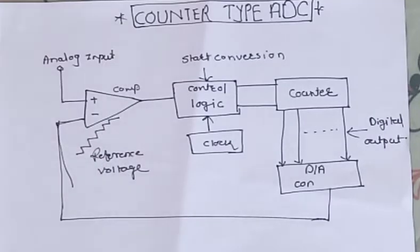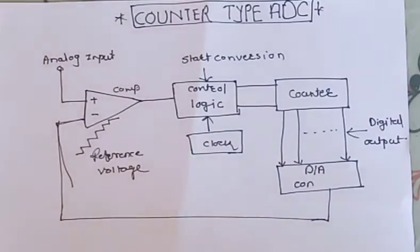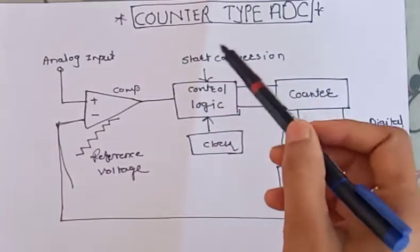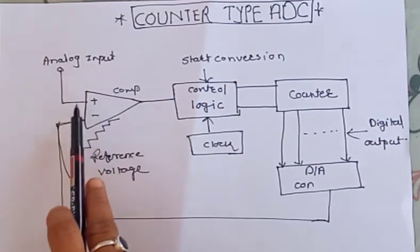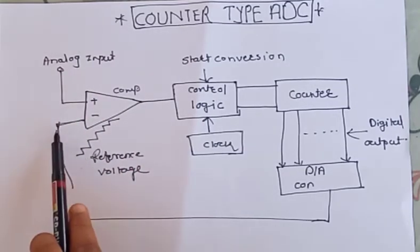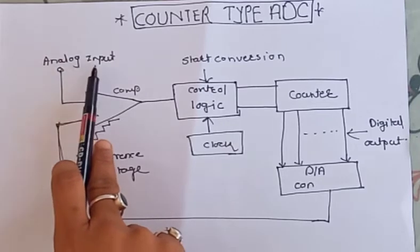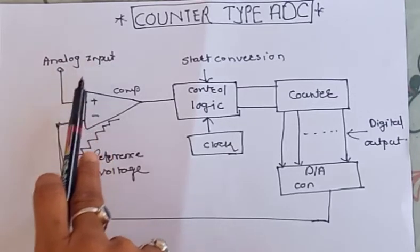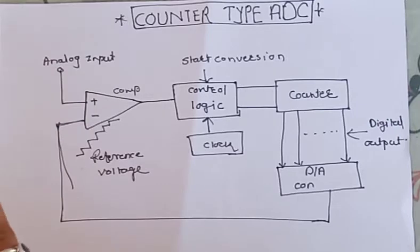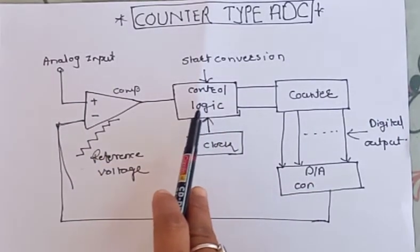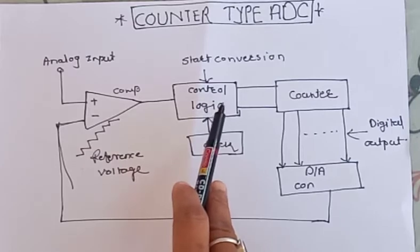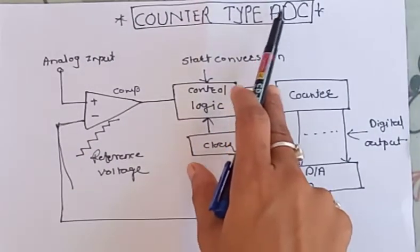ADC means analog to digital converter. We are going to start with counter type ADC. The counter type ADC block diagram consists of a comparator which compares the reference voltage at the negative terminal with the analog input applied to the positive terminal. Here you have the conversion logic, that is control logic.